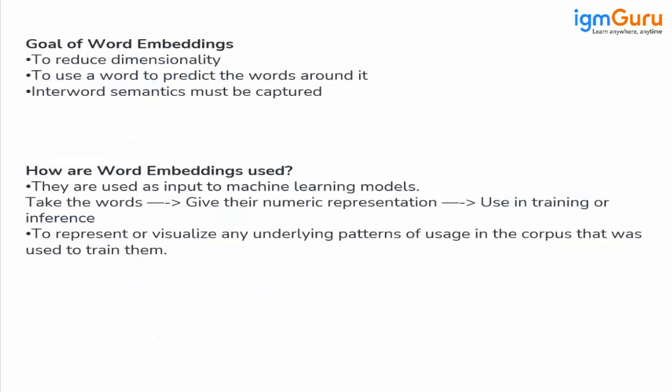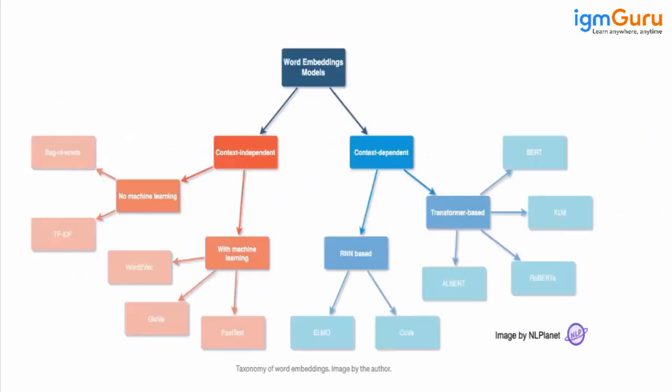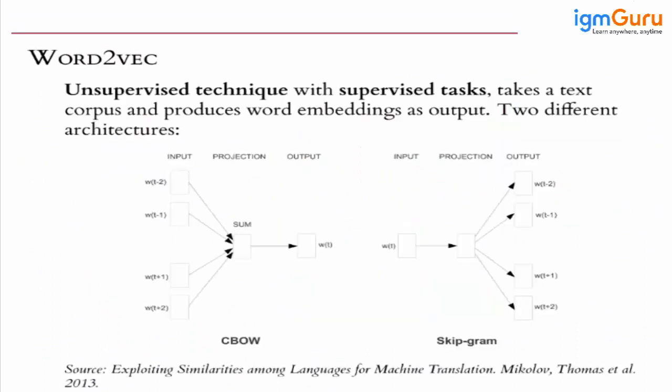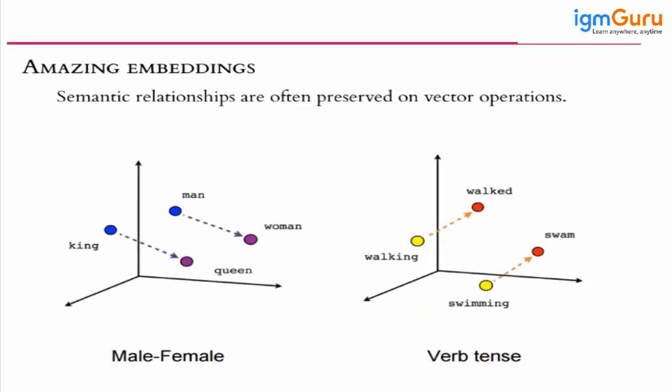Those are the different applications of word embedding. Now, the different models available include Word2Vec. Word2Vec is a deep learning model with two variants: CBOW, where we pass context words to find the target word, and Skip-gram, where we pass a single word and try to find the adjacent words.